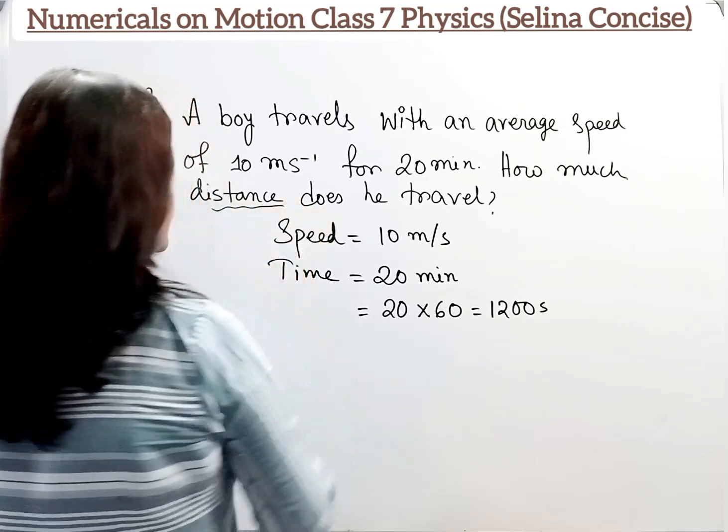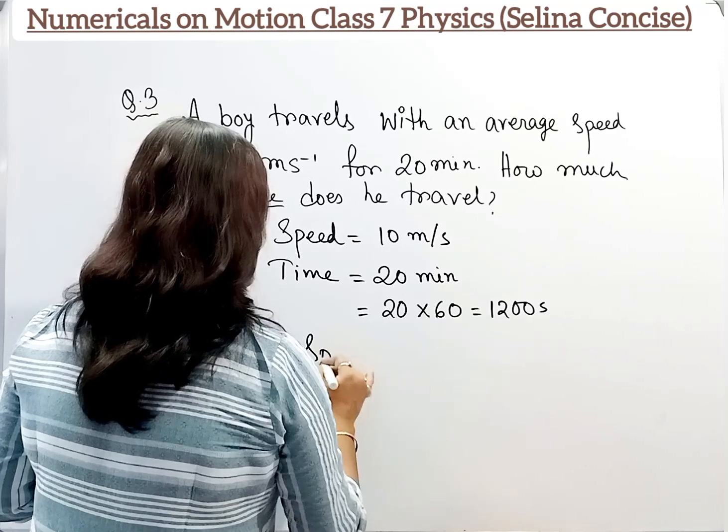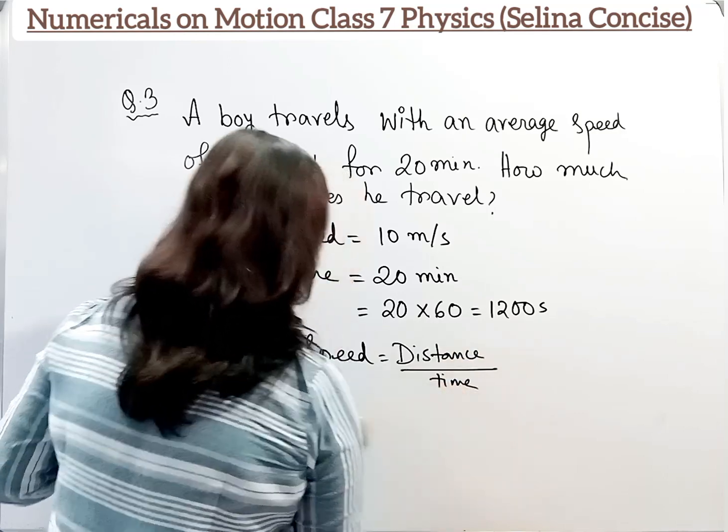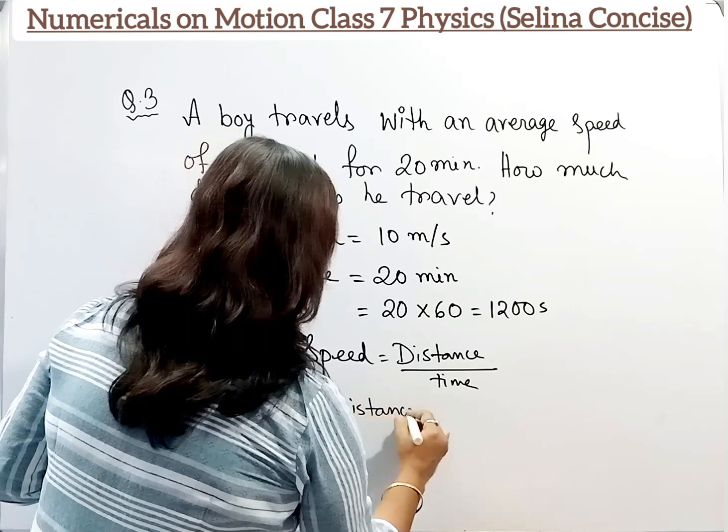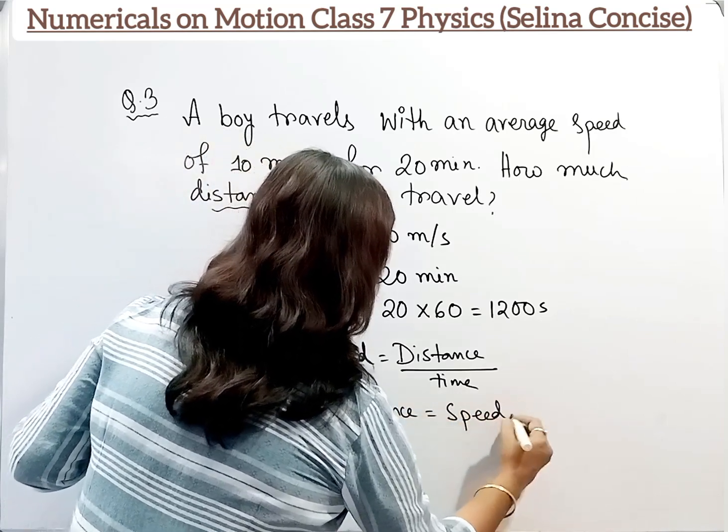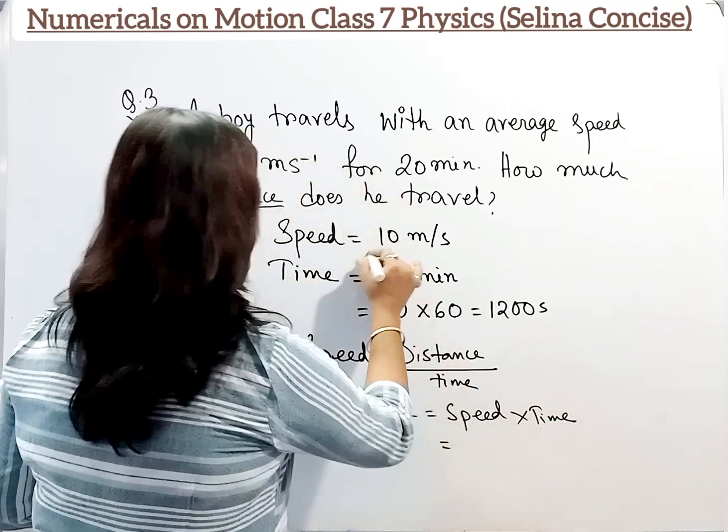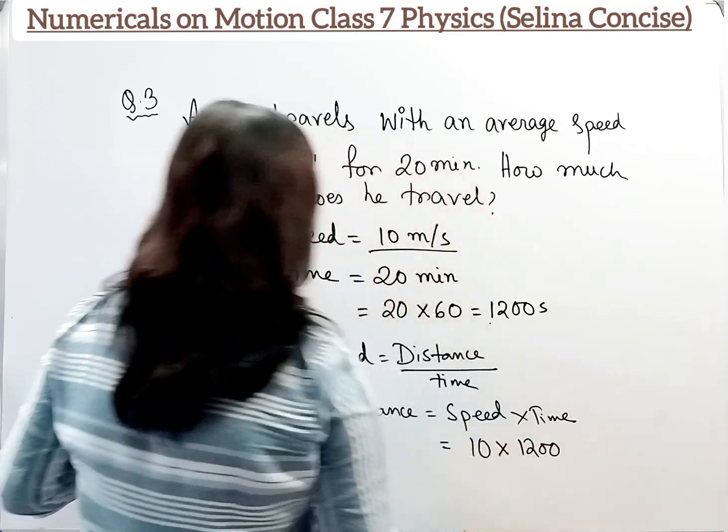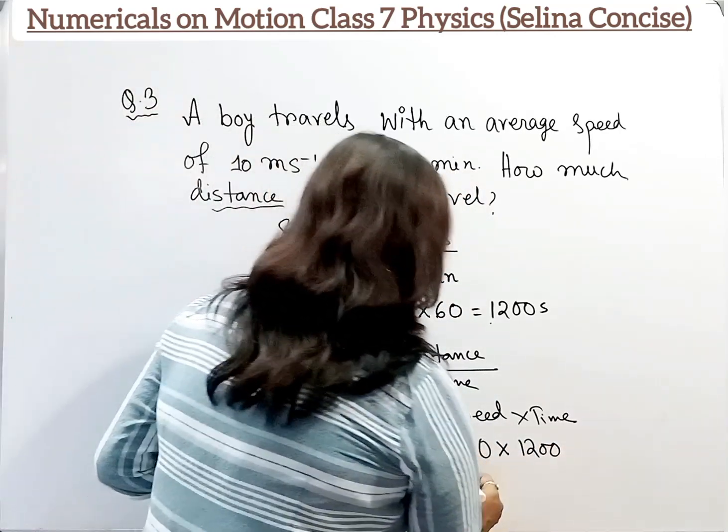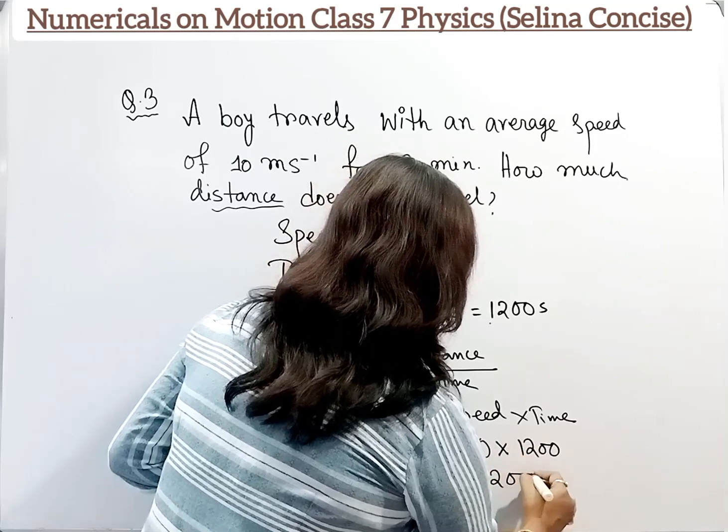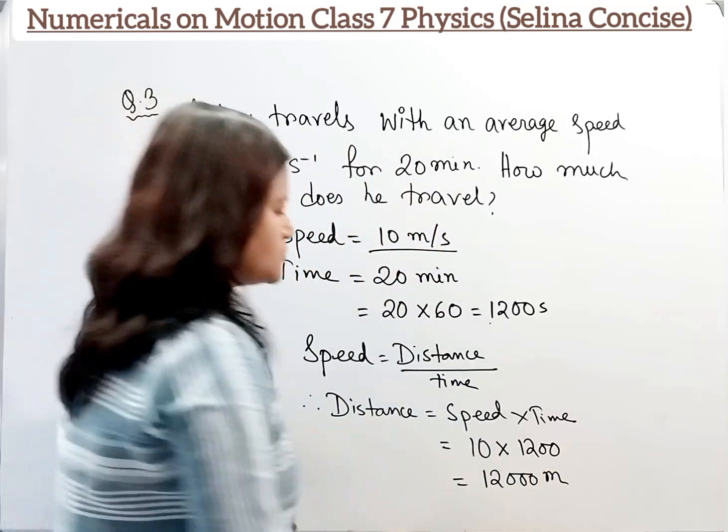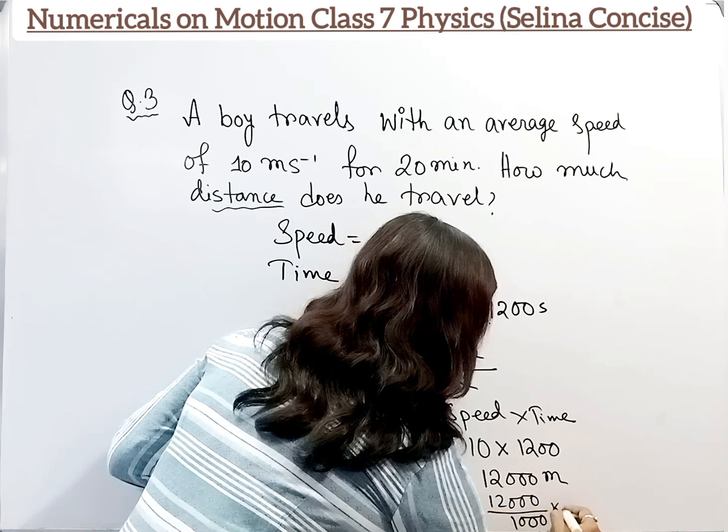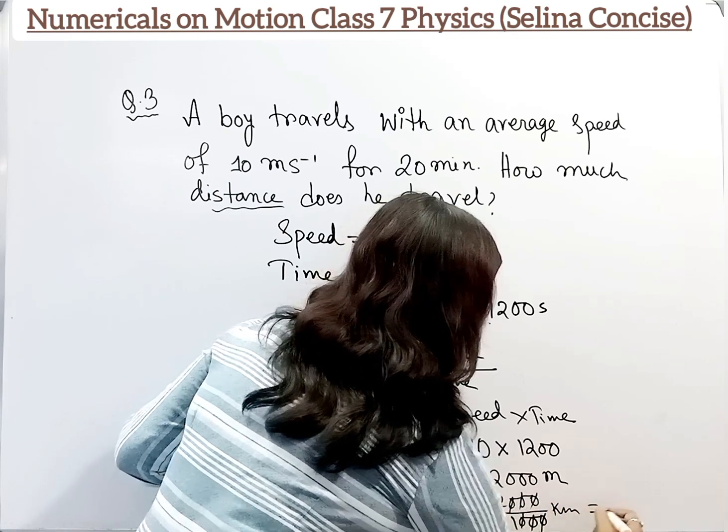Now how much distance does it travel? We have to find out distance. We know that speed equals distance by time. Therefore, distance equals speed into time. Speed is 10 meters per second, so 10, and time is 1200 seconds. Multiplying gives us 12,000 meters. Dividing by thousands to convert to kilometers, the zeros cancel, so the answer is 12 kilometers.